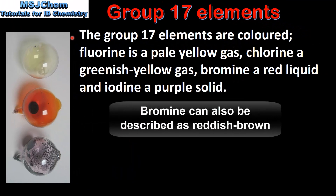The group 17 elements are coloured. Fluorine is a pale yellow gas, Chlorine a greenish yellow gas, Bromine a red liquid, and Iodine a purple solid. On the left we can see samples of Chlorine, Bromine, and Iodine.